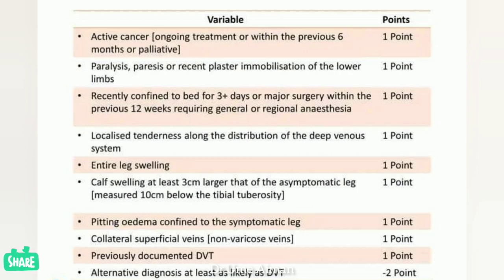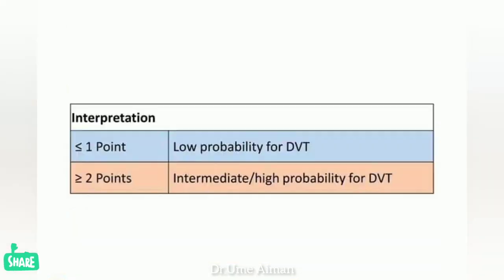Interpreting the Wells Score: if the score is equal to or less than one point, low probability for DVT is most likely. If the score is greater than or equal to two points, then intermediate or high probability for DVT is present in the patient.